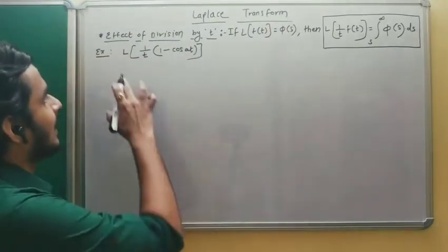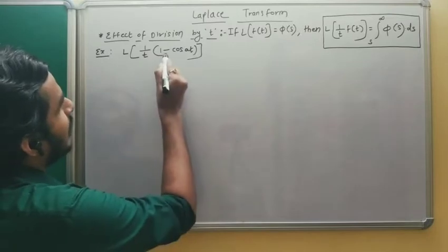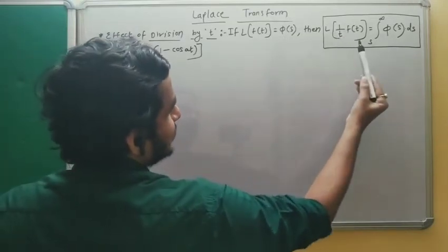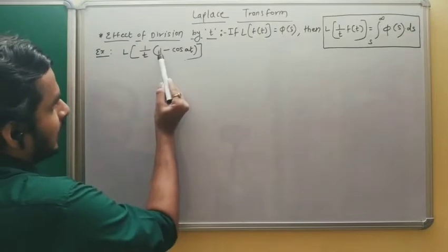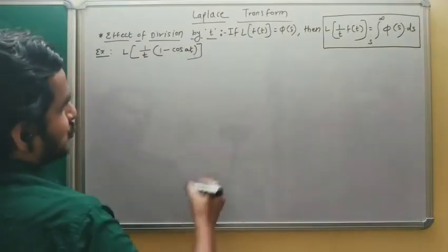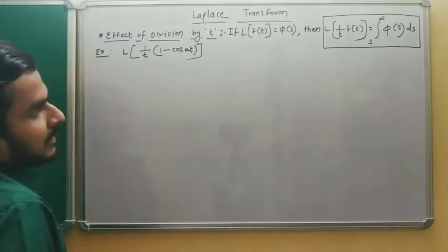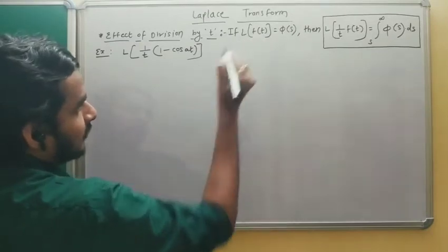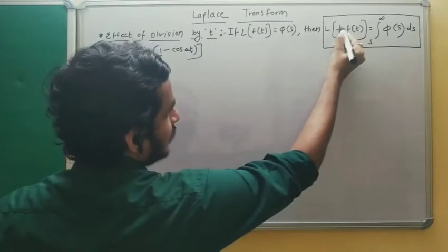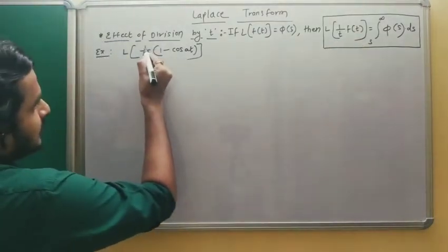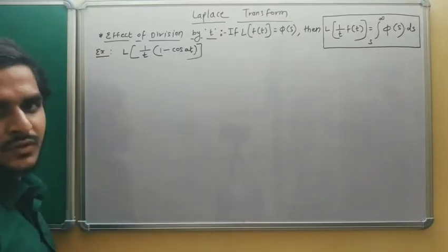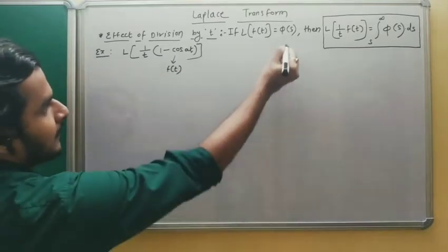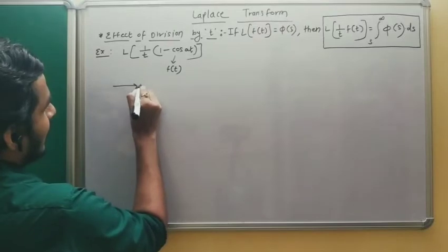The given example is: find the Laplace transform of (1/t)·(1 − cos(at)). This is in the form of Laplace transform of f(t) divided by t, where f(t) is (1 − cos(at)). So apply the formula. In the solution, the first step is to find the Laplace transform of f(t) — the function multiplied with 1/t, which is the bracket (1 − cos(at)).